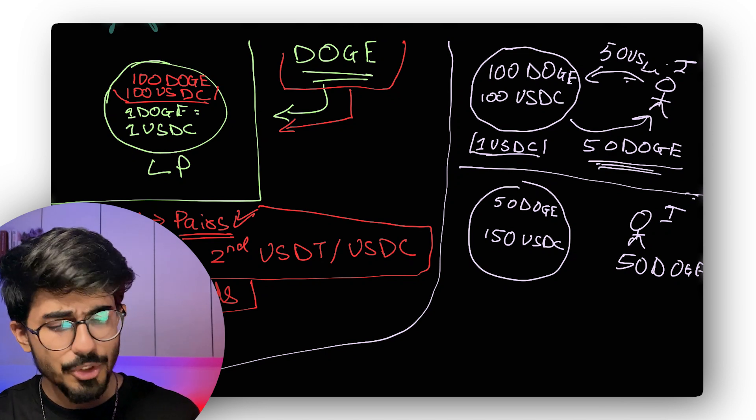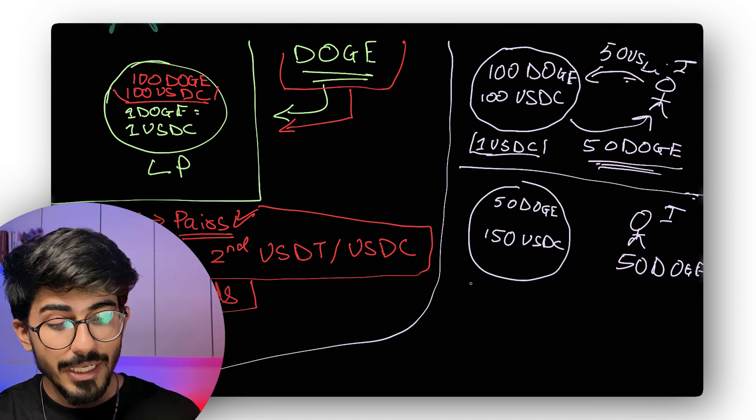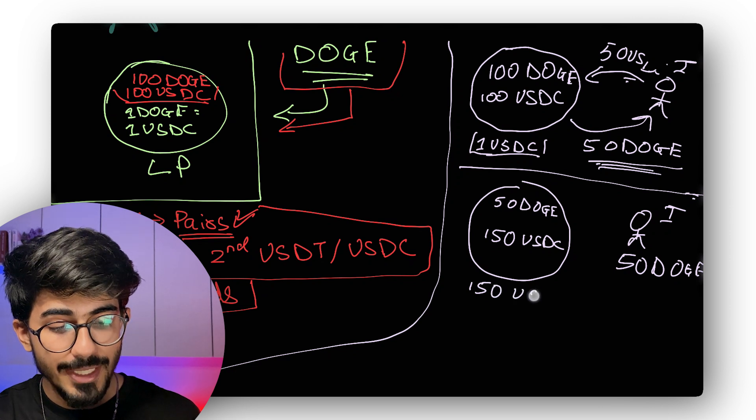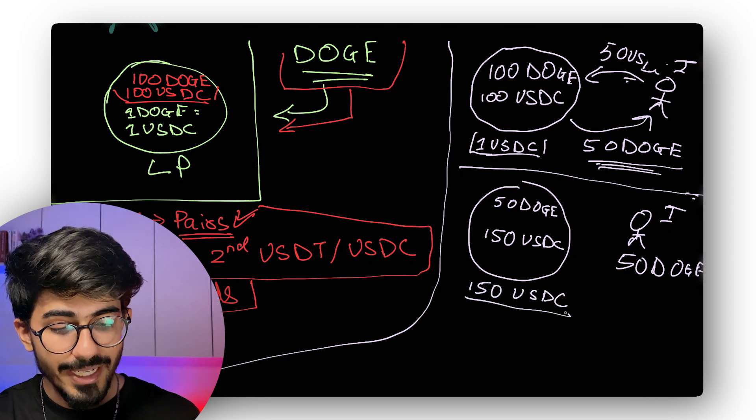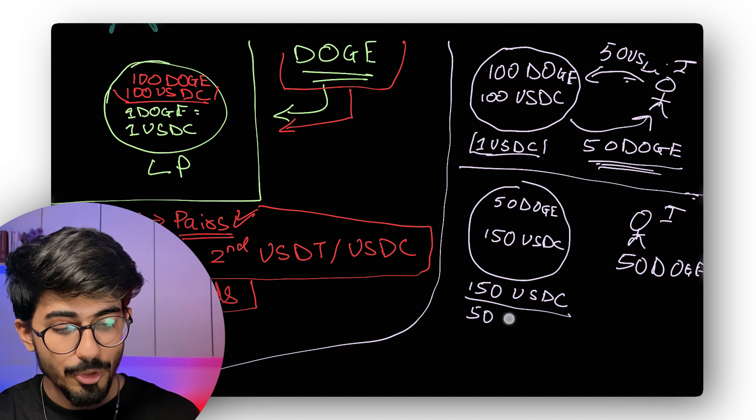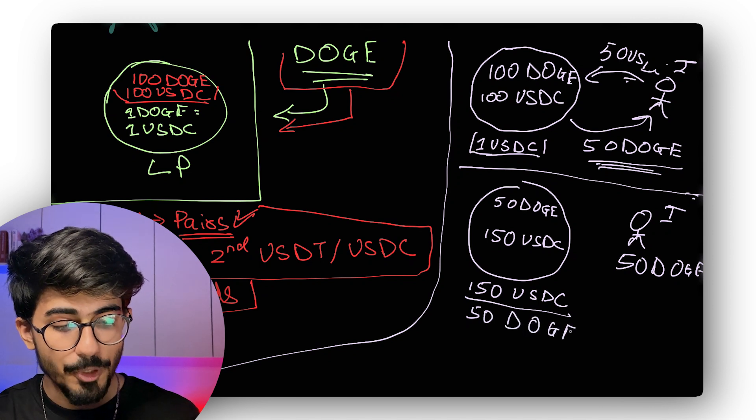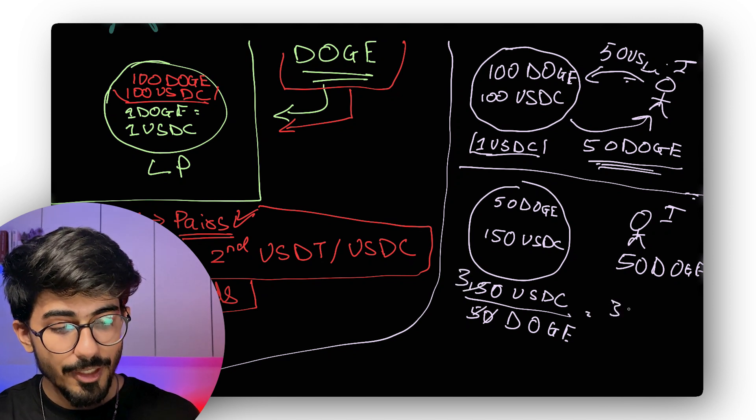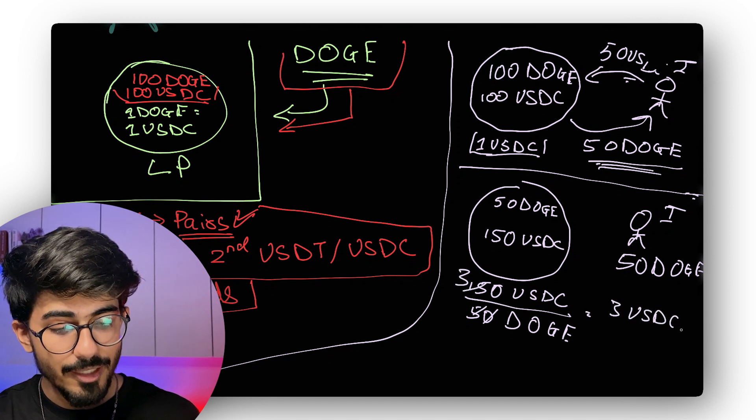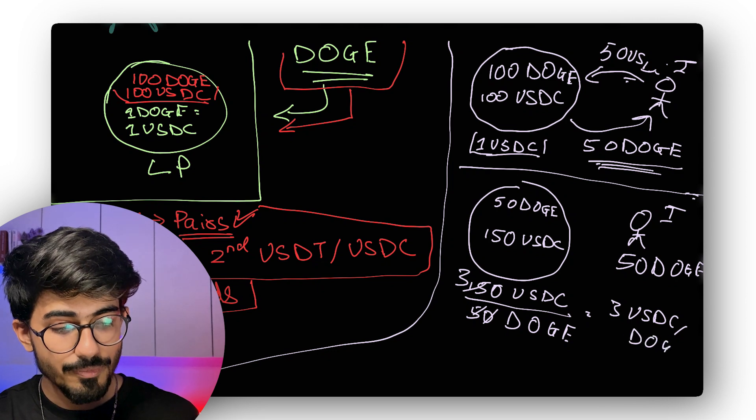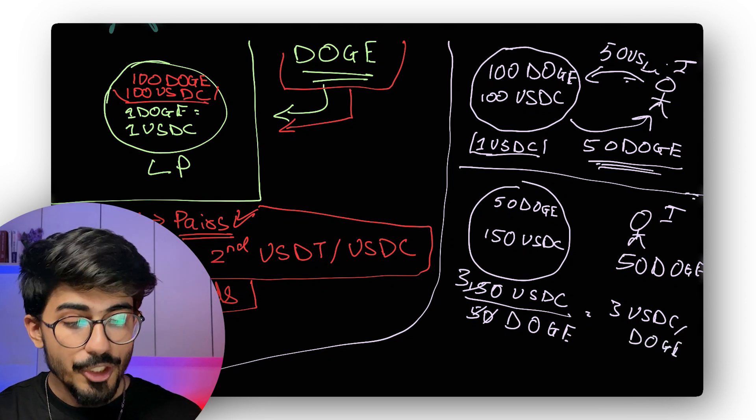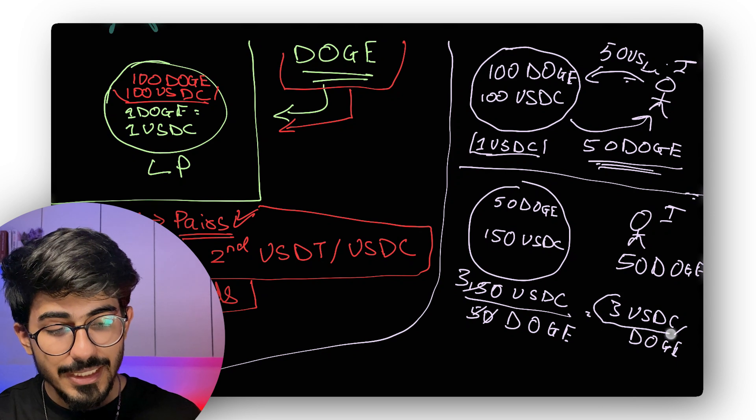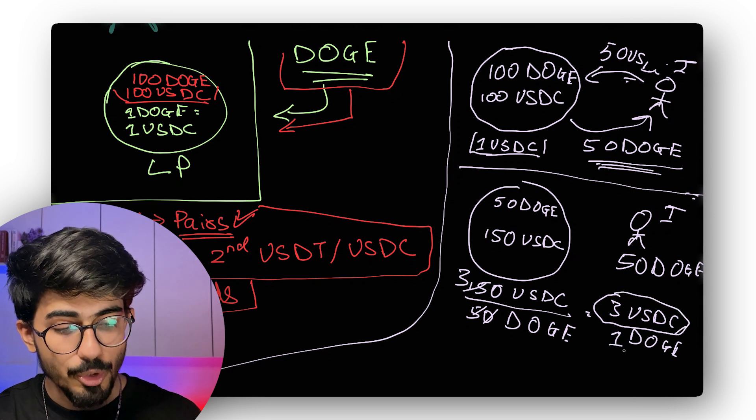So how has it changed? Let's do the calculation again. So over here, we'll take 150 USDC. We'll divide it by 50 Doge and get the price per Doge. So if we just divide it, you'll get 3 USDC divided by Doge, which basically means that you would have to pay 3 USDC in order to buy 1 Doge coin.